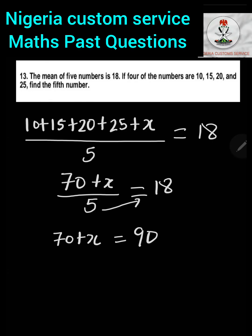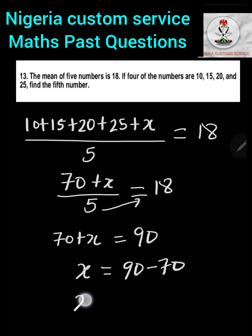Collecting like terms, x equals 90 minus 70, which gives us 20. Therefore the fifth number that makes everything balance is 20.